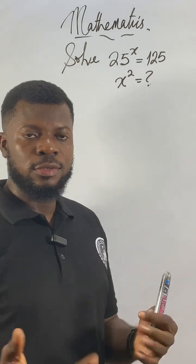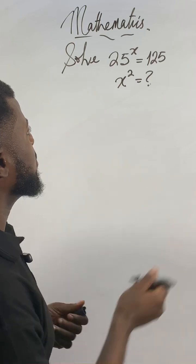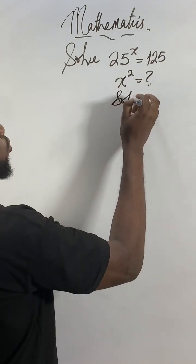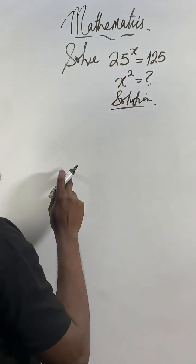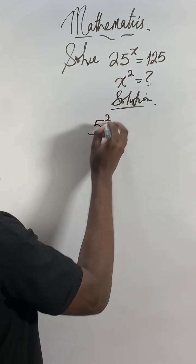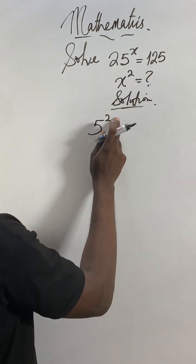So what you will do, if you solve this question with different means, let me see the one that will go quick. You know that 25 can be broken down because 5 raised to the power of 2, 5 times 5 will give me 25. So 25 is 5 raised to the power of 2.